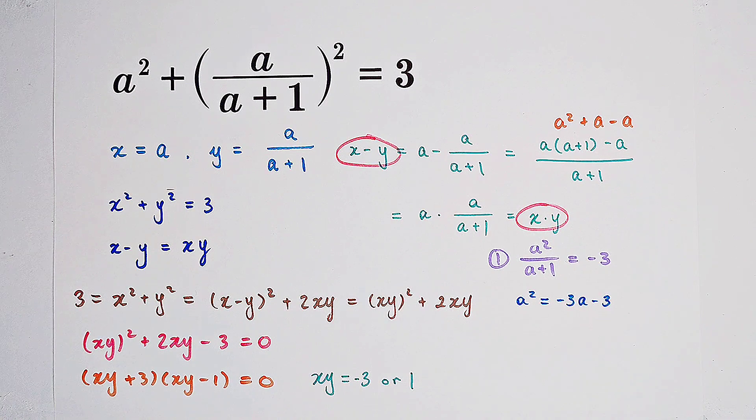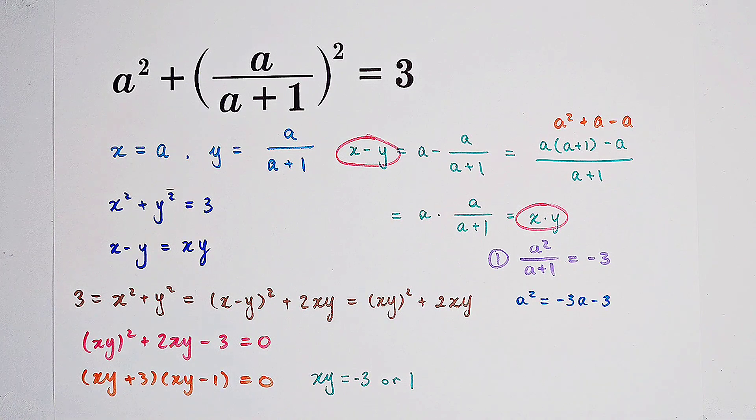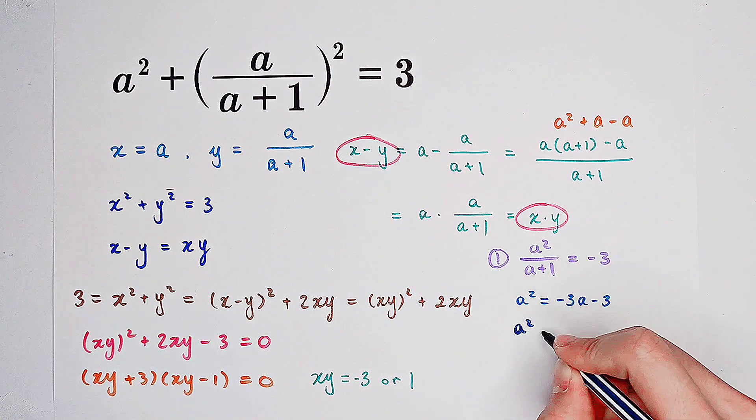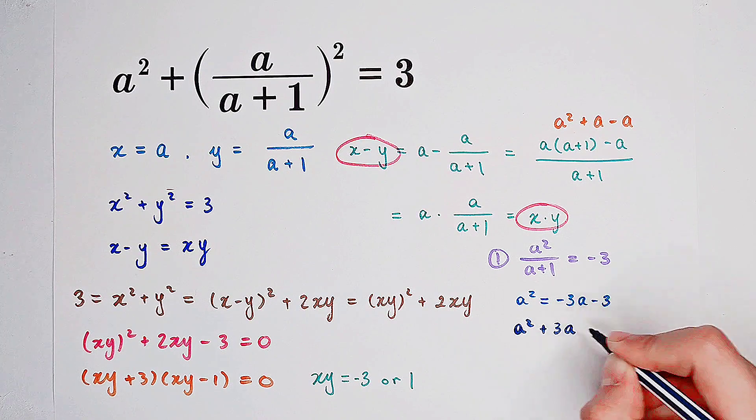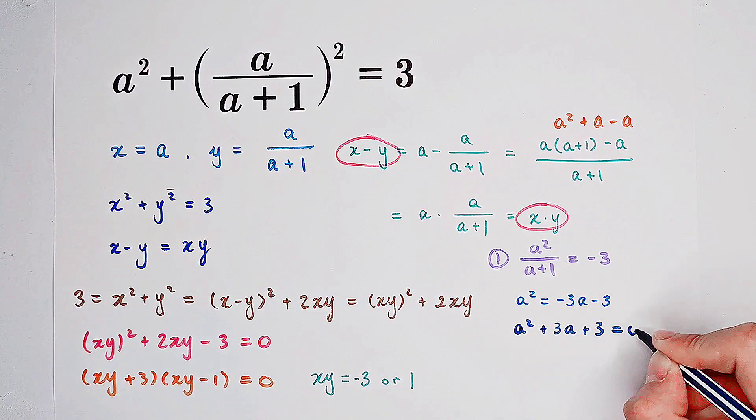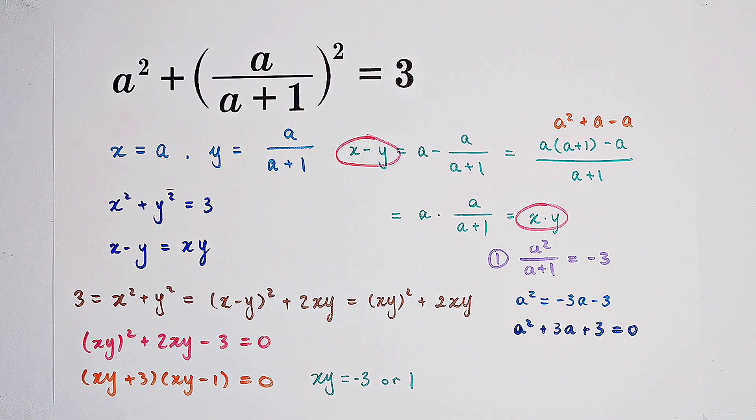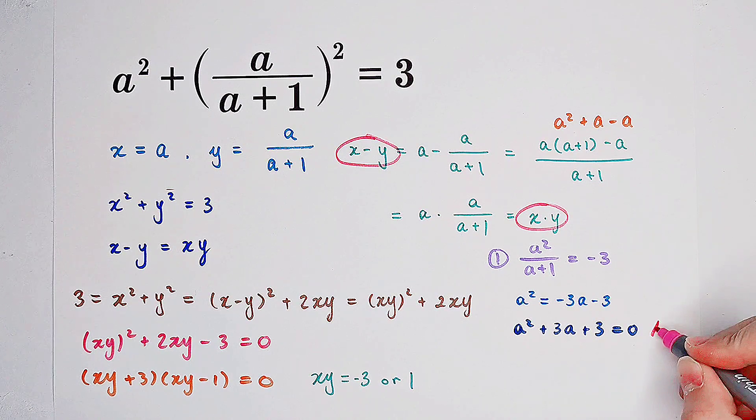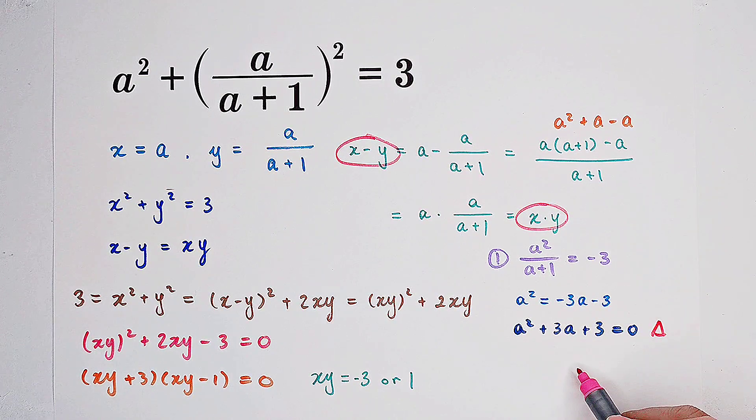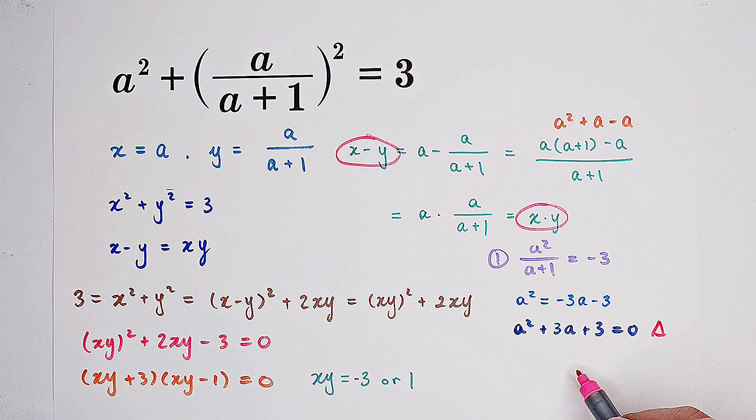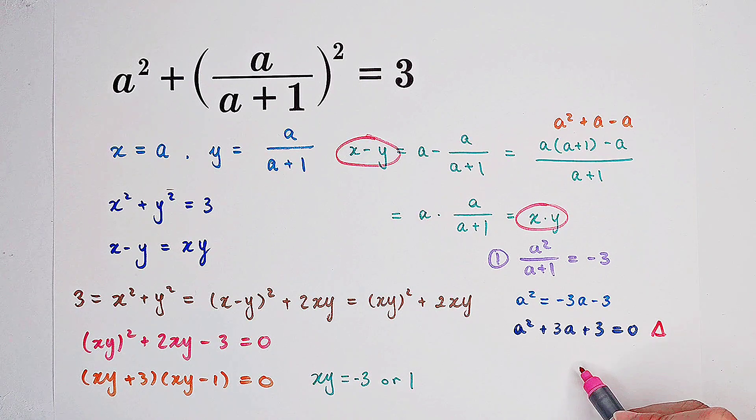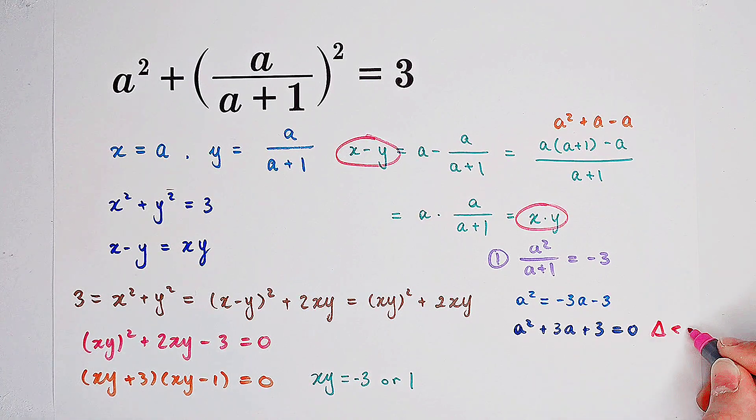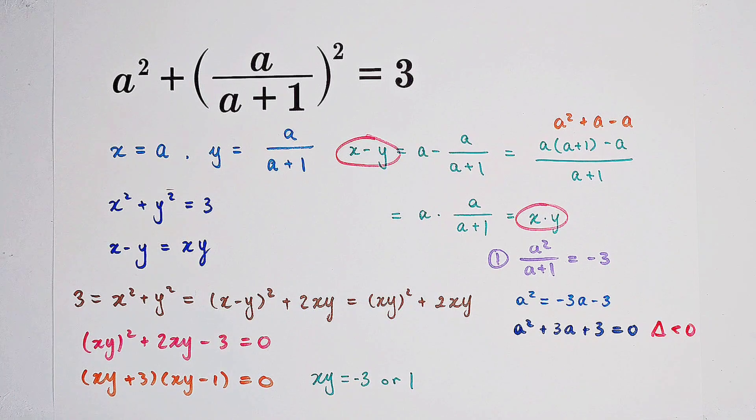It is equivalent to a squared equals minus 3 times a, then minus 3. And we get a quadratic equation about a: a squared plus 3a plus 3 equals 0. However, if we check the discriminant, you can find out that the delta is 3 squared minus 4 times 3, which is negative 3.